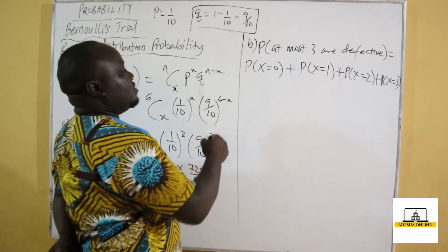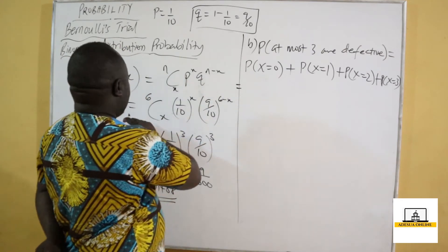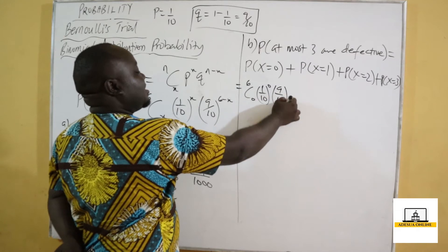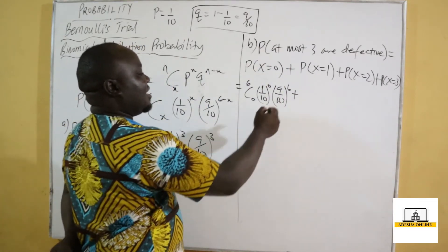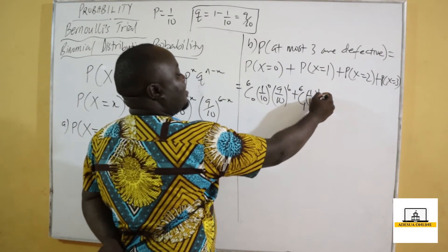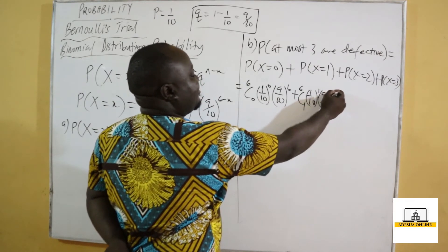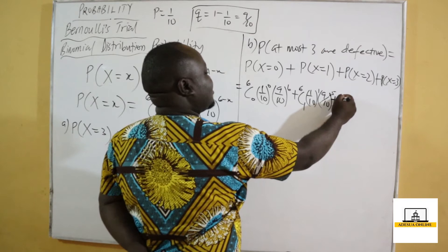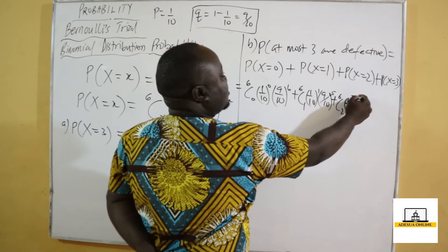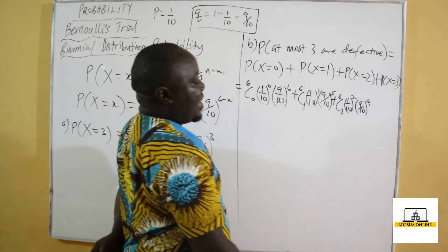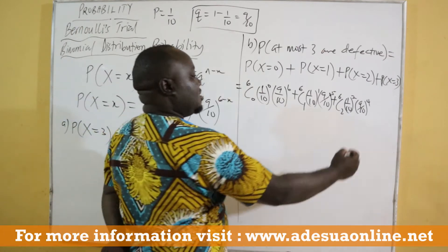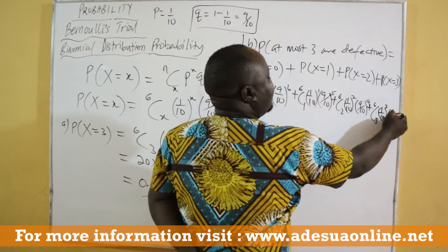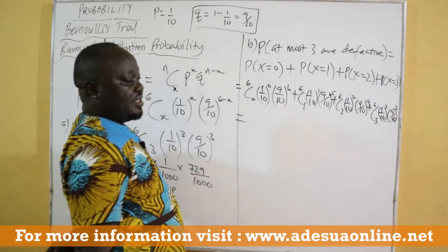For x equals zero: six combination zero, times one over ten to the power zero, times nine over ten to the power six. For x equals one: six combination one, times one over ten to the power one, times nine over ten to the power five. For x equals two: six combination two, times one over ten squared, times nine over ten to the power four. For x equals three: six combination three, times one over ten cubed, times nine over ten cubed.